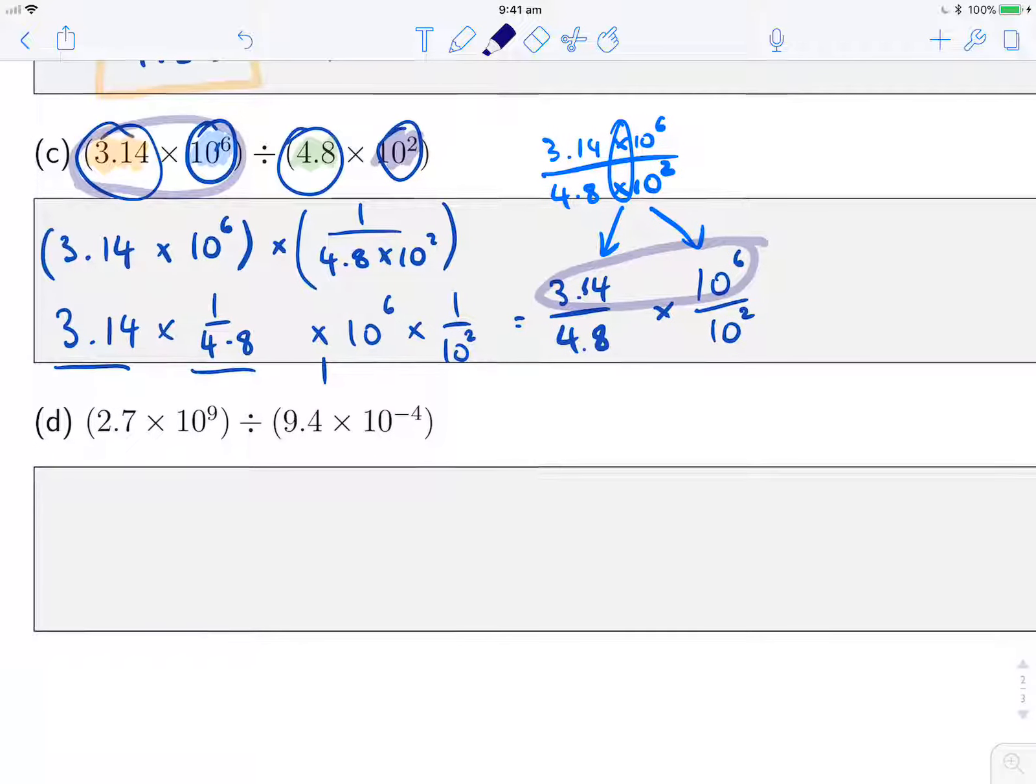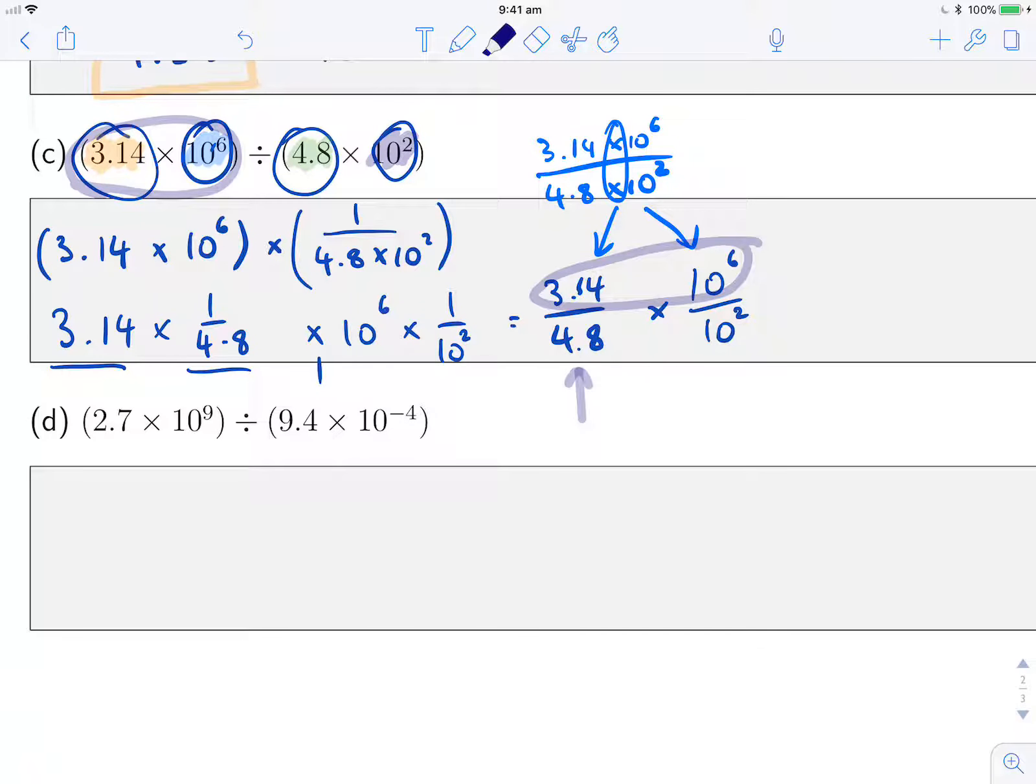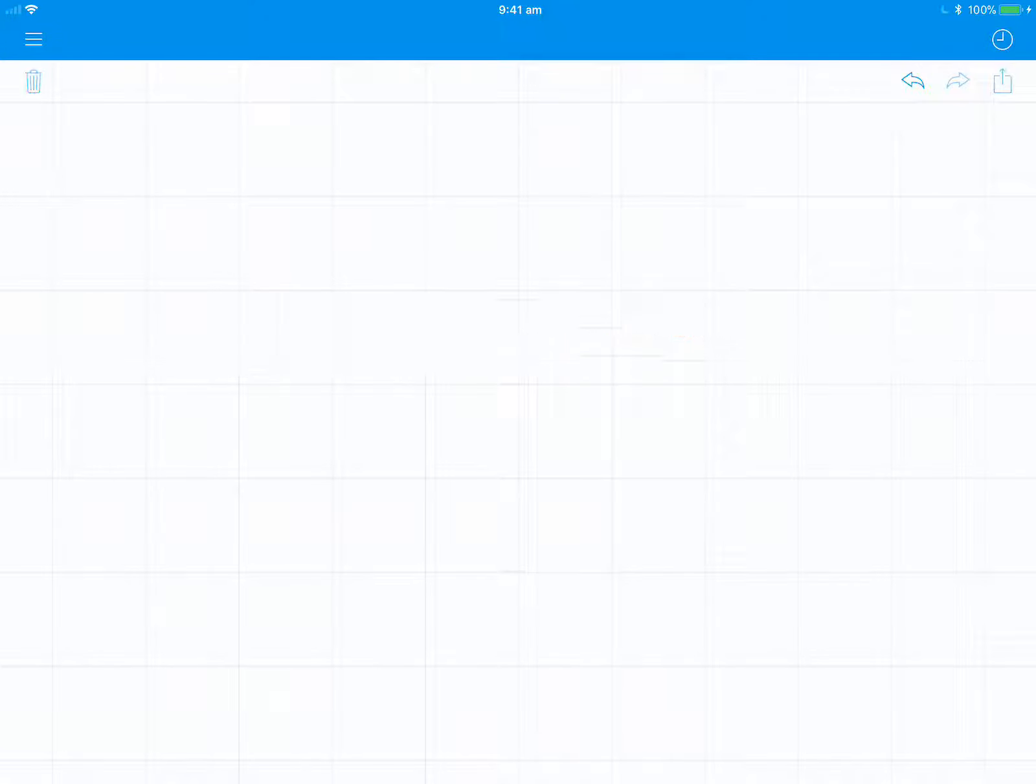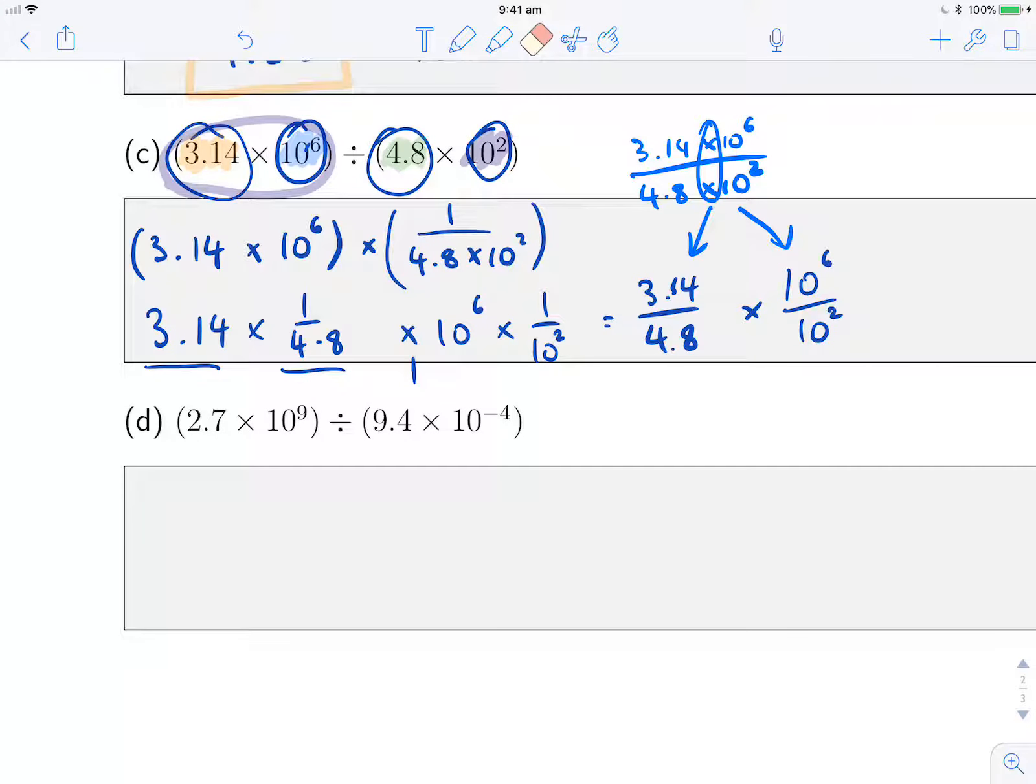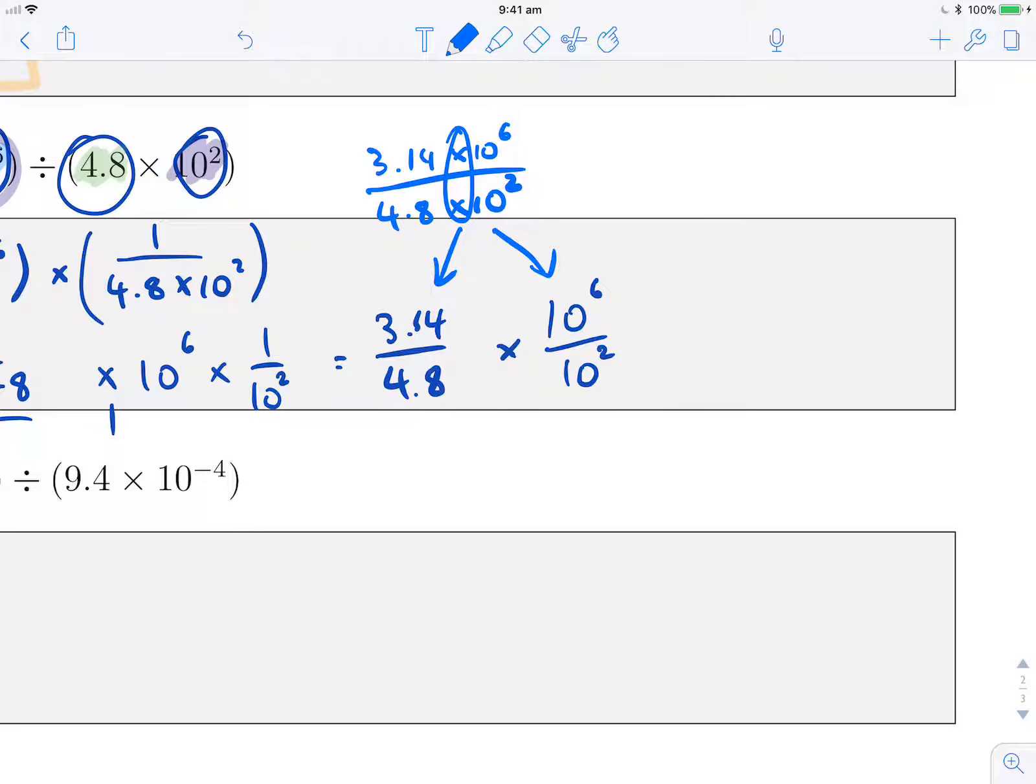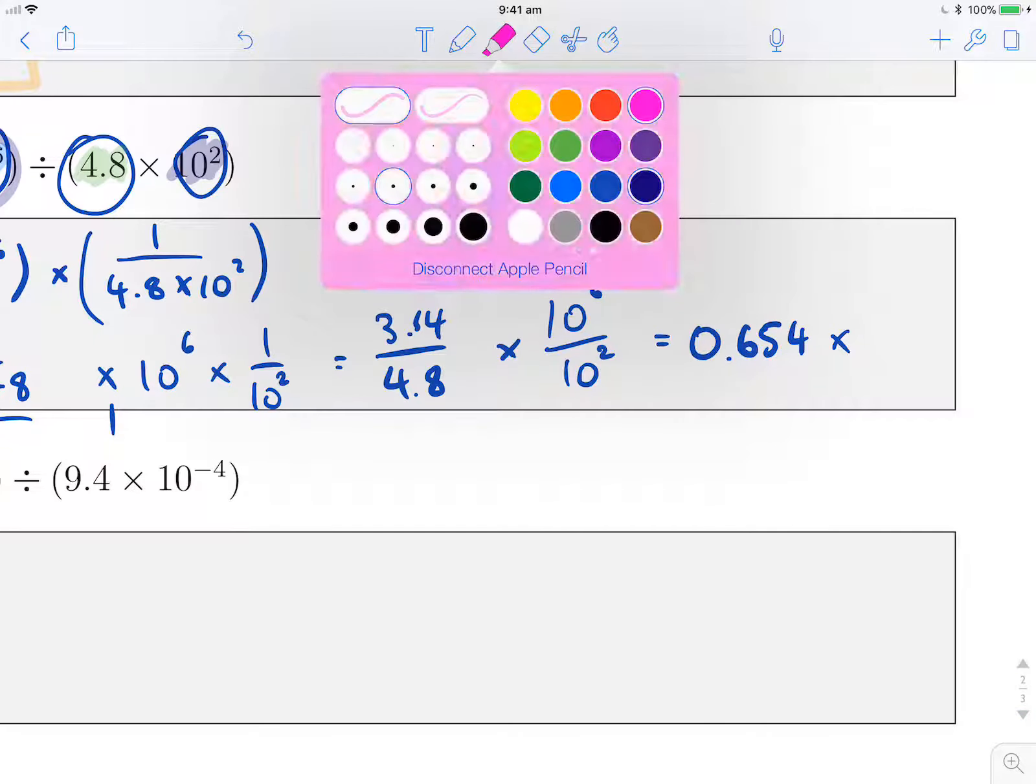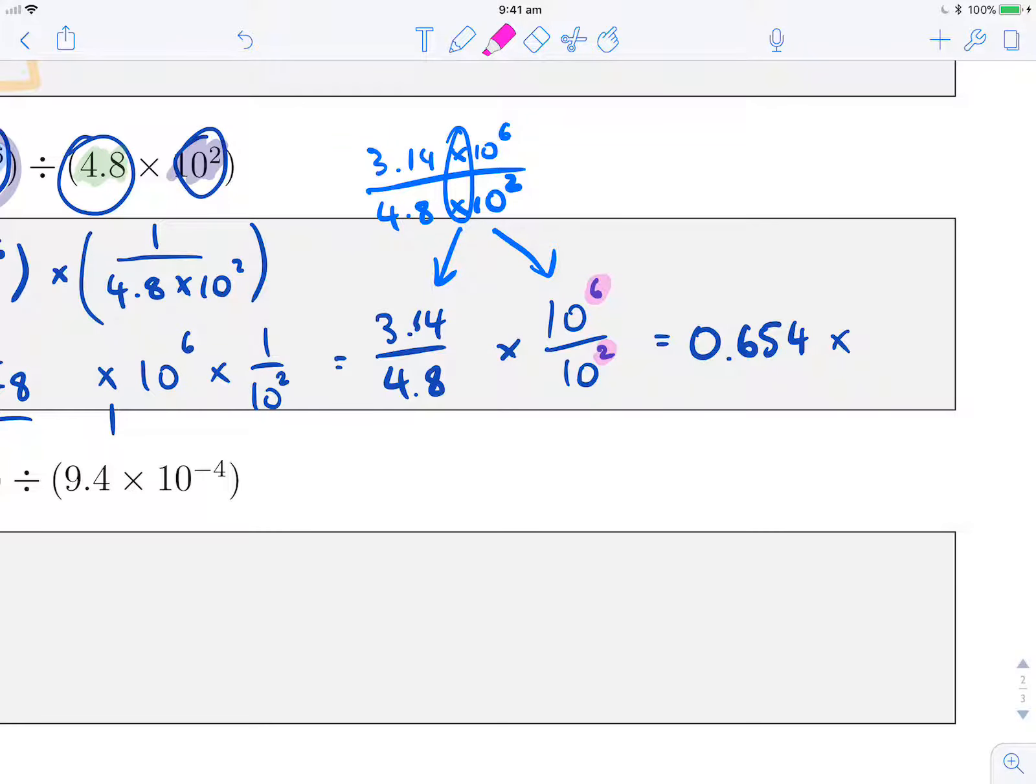So then, it becomes pretty similar to how we did multiplication, so we're just going to evaluate 3.14 divided by 4.8. And with our powers, when we're dividing, we subtract. So this is going to be 10 to the power of 6 minus 2, so I get times 10 to the power of 4.